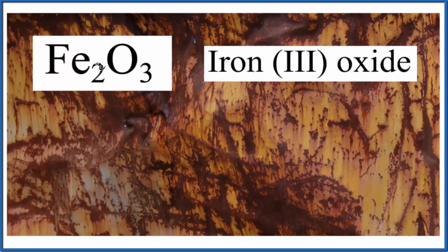Oxygen is always two minus. So three times two minus is six minus, two times three plus is six plus. That's why we have the formula Fe2O3 for iron three oxide.